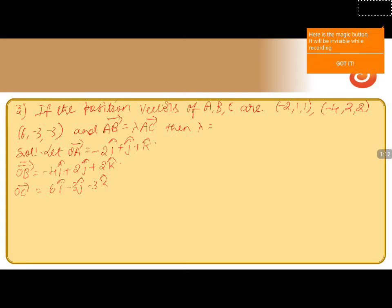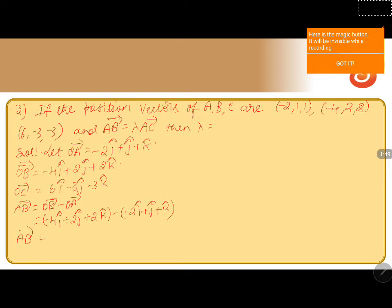Now we calculate AB vector, since AB vector equals lambda into AC vector. AB vector is given by OB vector minus OA vector, that is OB = minus 4 i-cap plus 2 j-cap plus 2 k-cap, minus OA = minus 2 i-cap plus j-cap plus k-cap. Simplifying, AB vector equals minus 2 i-cap plus j-cap plus k-cap.